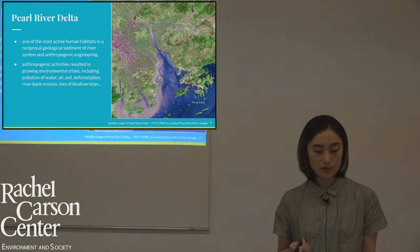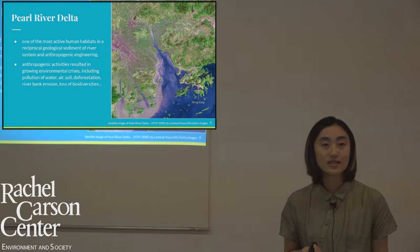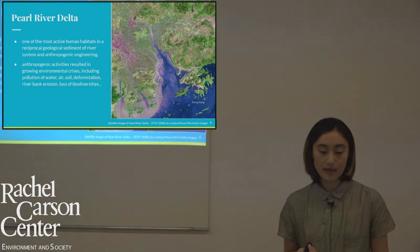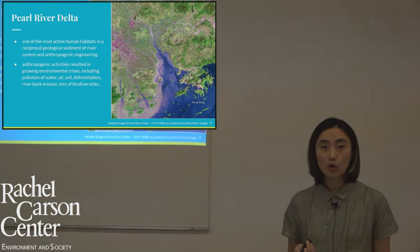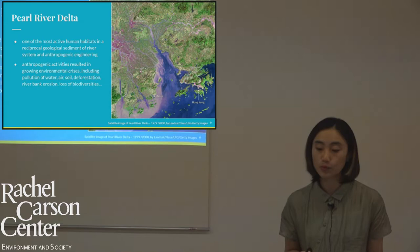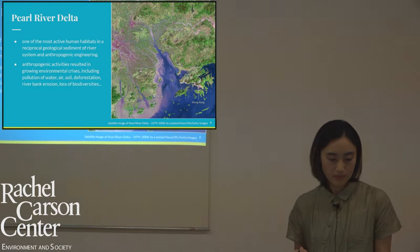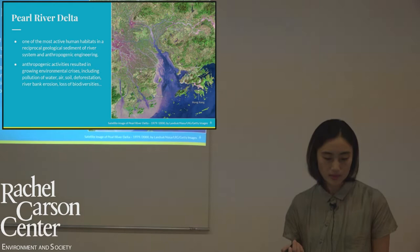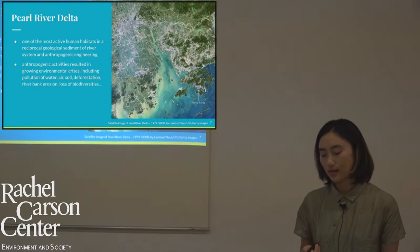Now I turn to an ongoing research focused on the Pearl River Delta in southern China, where I spent most of my teenagehood and partial adulthood. The Pearl River Delta is one of the most active human habitats in the reciprocal geological sediment of river systems and anthropogenic engineering. According to the World Bank, by 2015 it exceeded Tokyo to become the biggest urban area in the world by population and geographical size. Meanwhile, anthropogenic activities have greatly exploited the Delta's natural resources, resulting in growing environmental crises including pollution of water, soil, and air, erosion, and loss of biodiversity — as visible in satellite imagery showing drastic change from 1979 to 2000.